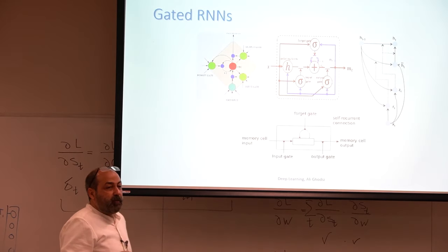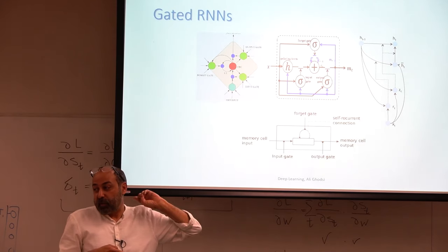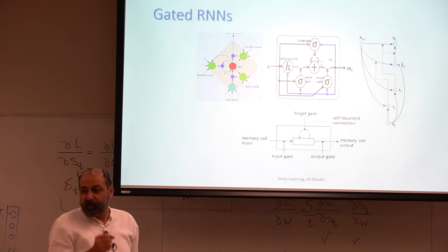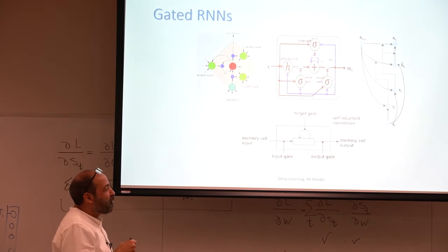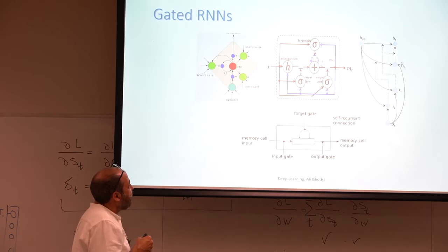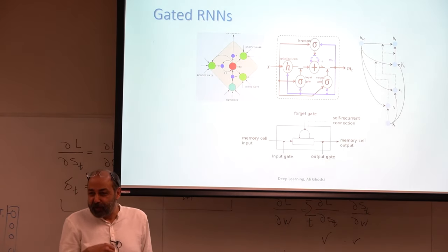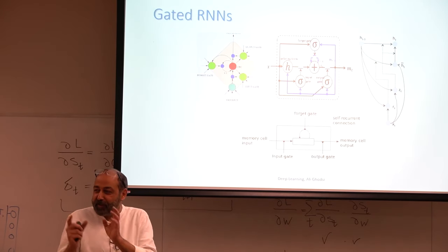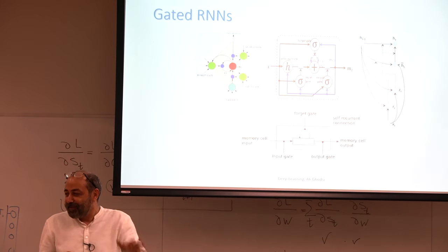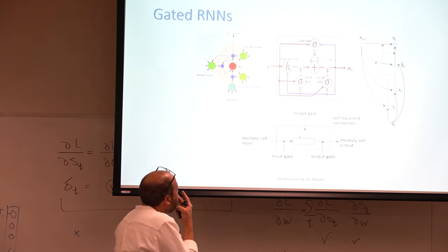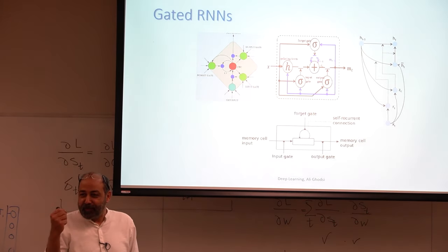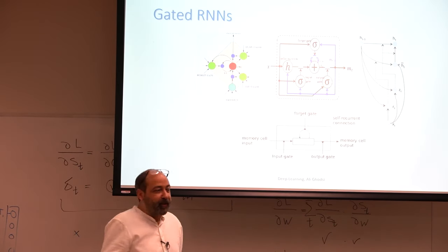If you look at the literature, there are many diagrams when people try to show GRU or LSTM — these are a subset of those. Personally, I can't make any sense of most of them. The fact that there are many very different diagrams to show LSTM makes me think many people feel the same way — they look at a diagram, can't make sense of it, come up with another one, and so on, until we have 100 different diagrams. My suggestion is: don't look at the diagrams, just look at the formula. The math is much easier.